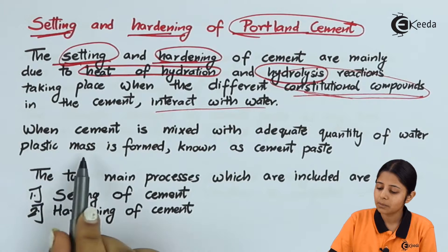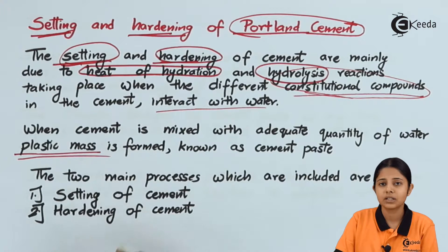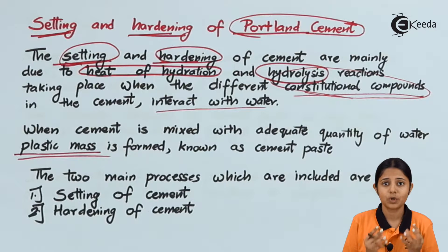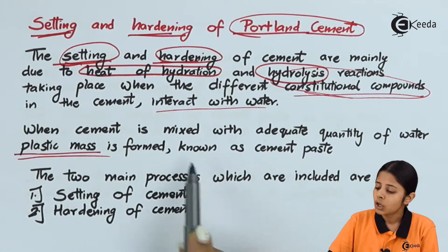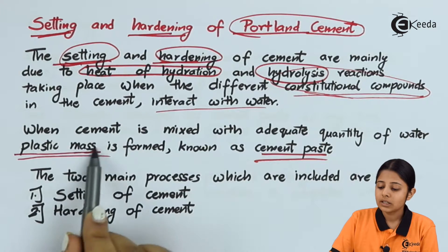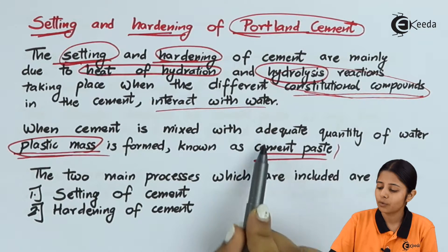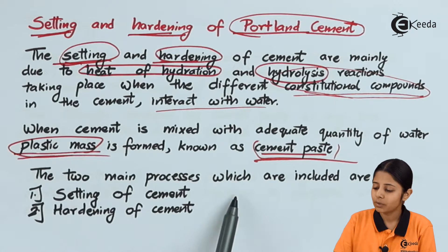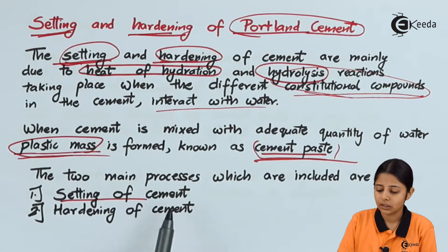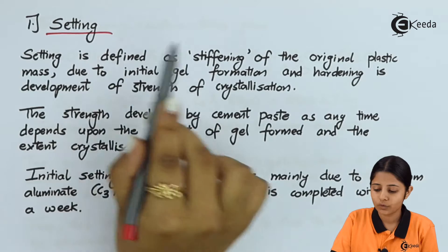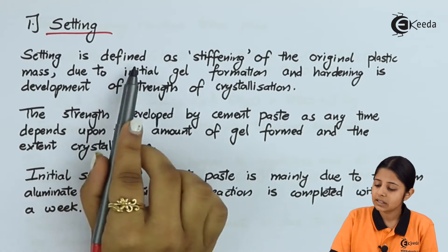When cement is mixed with an adequate quantity of water, a plastic mass forms. This plastic mass is a kind of paste or gelatinous mass. Its consistency is very important because this plastic mass is what we use for the actual purpose of construction — known as cement base. The two main processes included are setting of cement and hardening of cement.